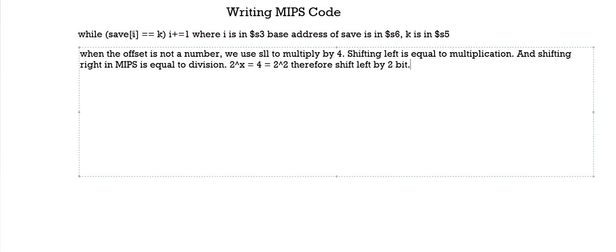For example, if we wanted to multiply i by 2, the number of bits we would need to shift left would be 1. In a similar way, you can calculate it for basically any multiplication number. So now we know that in order to convert this into a memory address, we need to multiply i by 4 by shifting it left by 2 bits and then normally add it to the base register.